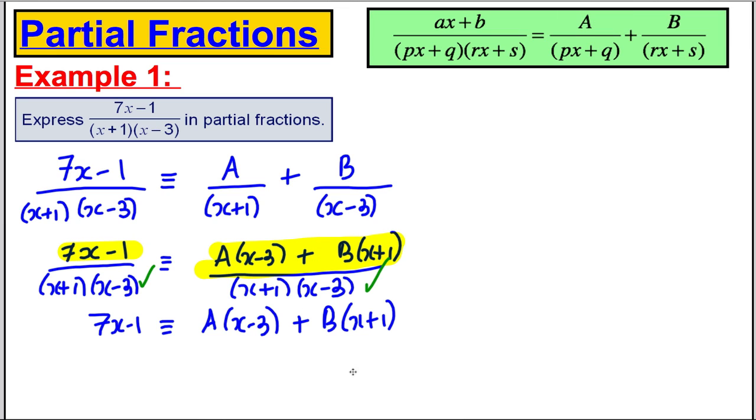This you should be reminded of is what we were doing in the second video - the method of substitution. So let's try and solve this. What could we let x be here in order to find A and B? Well, we could let x equal 3. This side therefore will be 21 minus 1 is 20, would be identical to - if I put 3 in here I get no A so it disappears - plus I get 4B, and this tells me that B must equal 5.